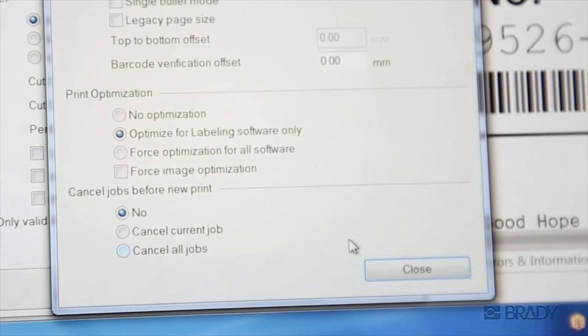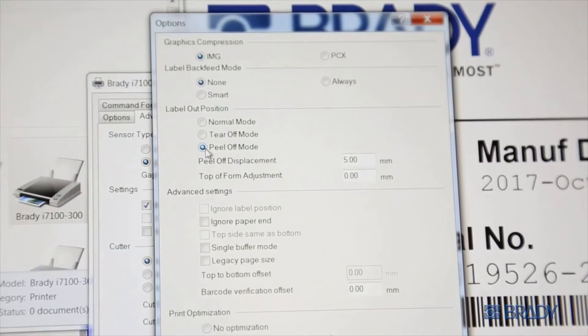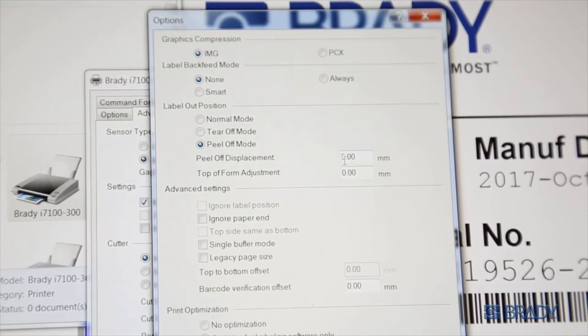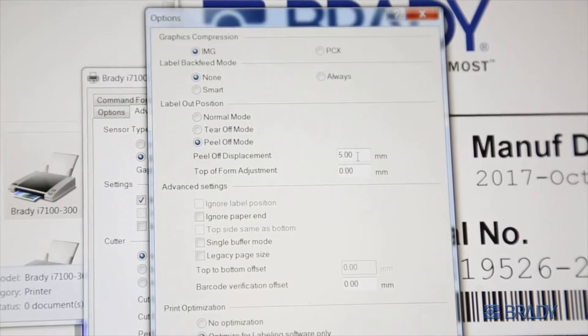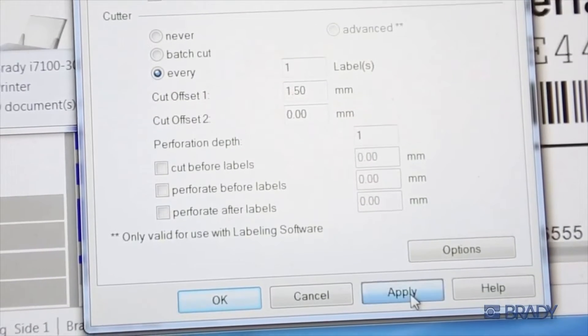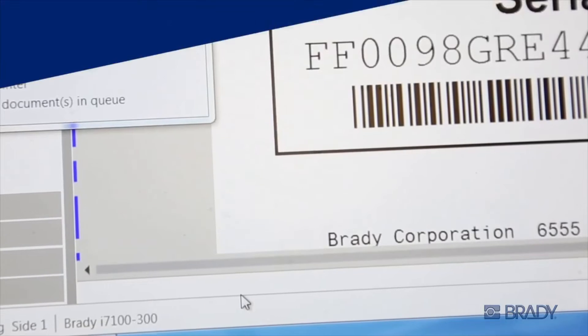Click the Options button within the tab, where you can change your print job type to a peel-off print job. You can adjust peel displacement here as well, which is the amount of exposed label that hangs off after printing. Then click Apply to apply your changes, then hit OK.